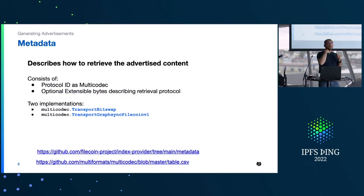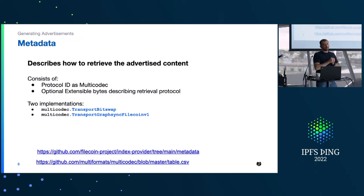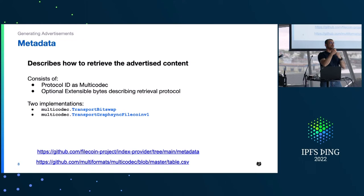There are two specific metadata types defined today. One is transport over Bitswap — you can see links to the multicodec CSV table where these codes appear. The second is GraphSync for Filecoin v1 data. For Bitswap, the protocol ID really doesn't have any bytes at the end, because as long as an endpoint supports Bitswap, the rest is simple — you just ask for content and get blocks back. But with GraphSync over Filecoin, you require more information to instantiate a retrieval.